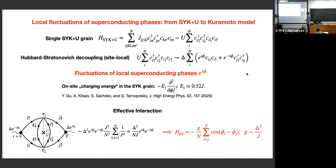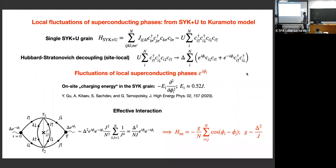The on-site charging energy is approximately half of the SYK coupling strength J. This charging energy tries to destroy phase coherence between the superconducting phases and eliminate superconductivity. However, there is a second term: an effective interaction between superconducting phases at different grains. This interaction can be calculated from a specific diagram in imaginary-time formalism, where the points are the local superconducting order parameters delta at sites i and j, with solid lines as normal Green's functions and double-arrow lines as anomalous Green's functions.